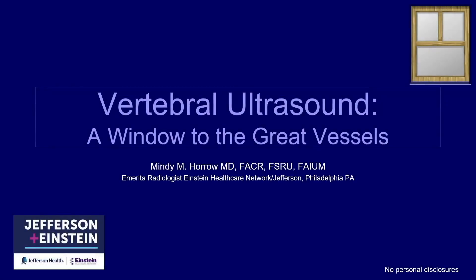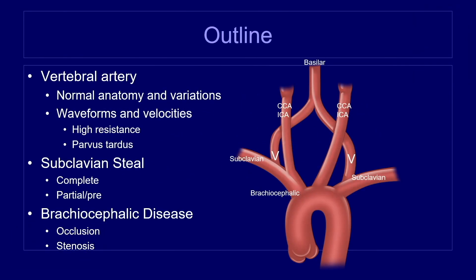Now we're going to turn to vertebral ultrasound. Many of the guidelines and specific points about waveforms and how important they are for anticipating disease somewhere you cannot directly image become crucial in the vertebral artery. The outline covers: first, the vertebral artery itself in situ; then, what happens to vertebral artery waveforms when there are problems elsewhere in the great vessel circulation — places you are not directly imaging — which is a very important part of waveform analysis.